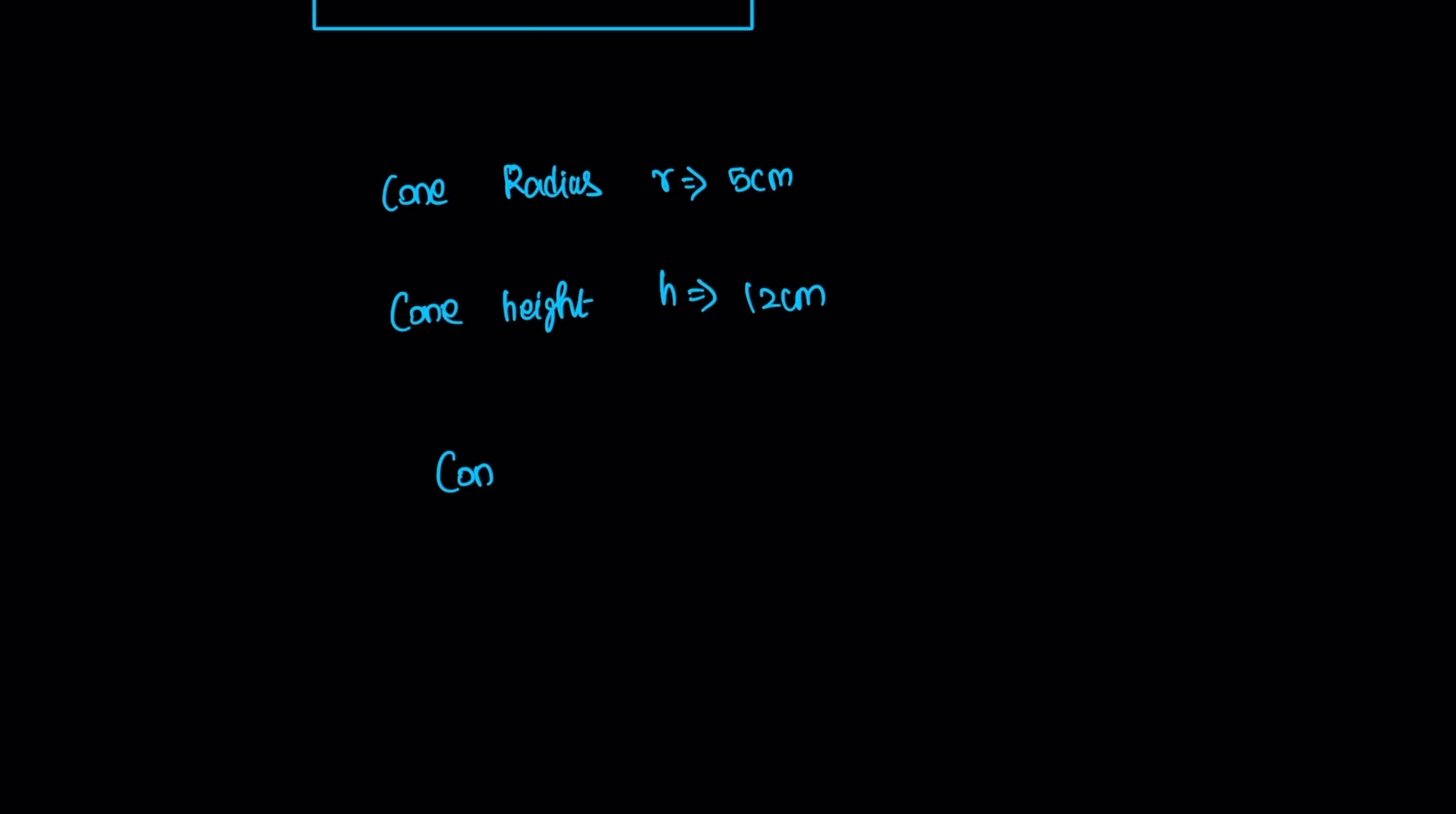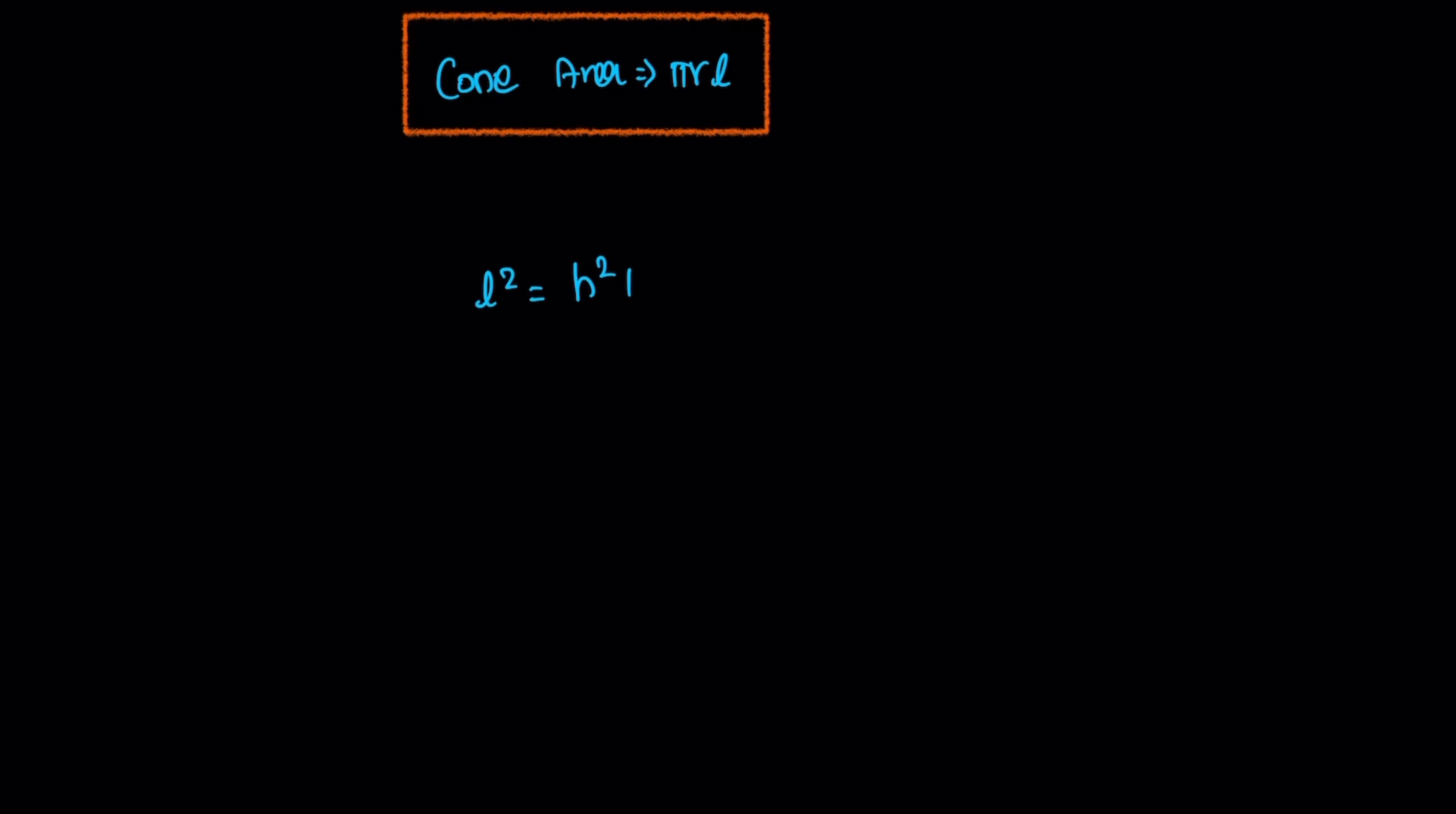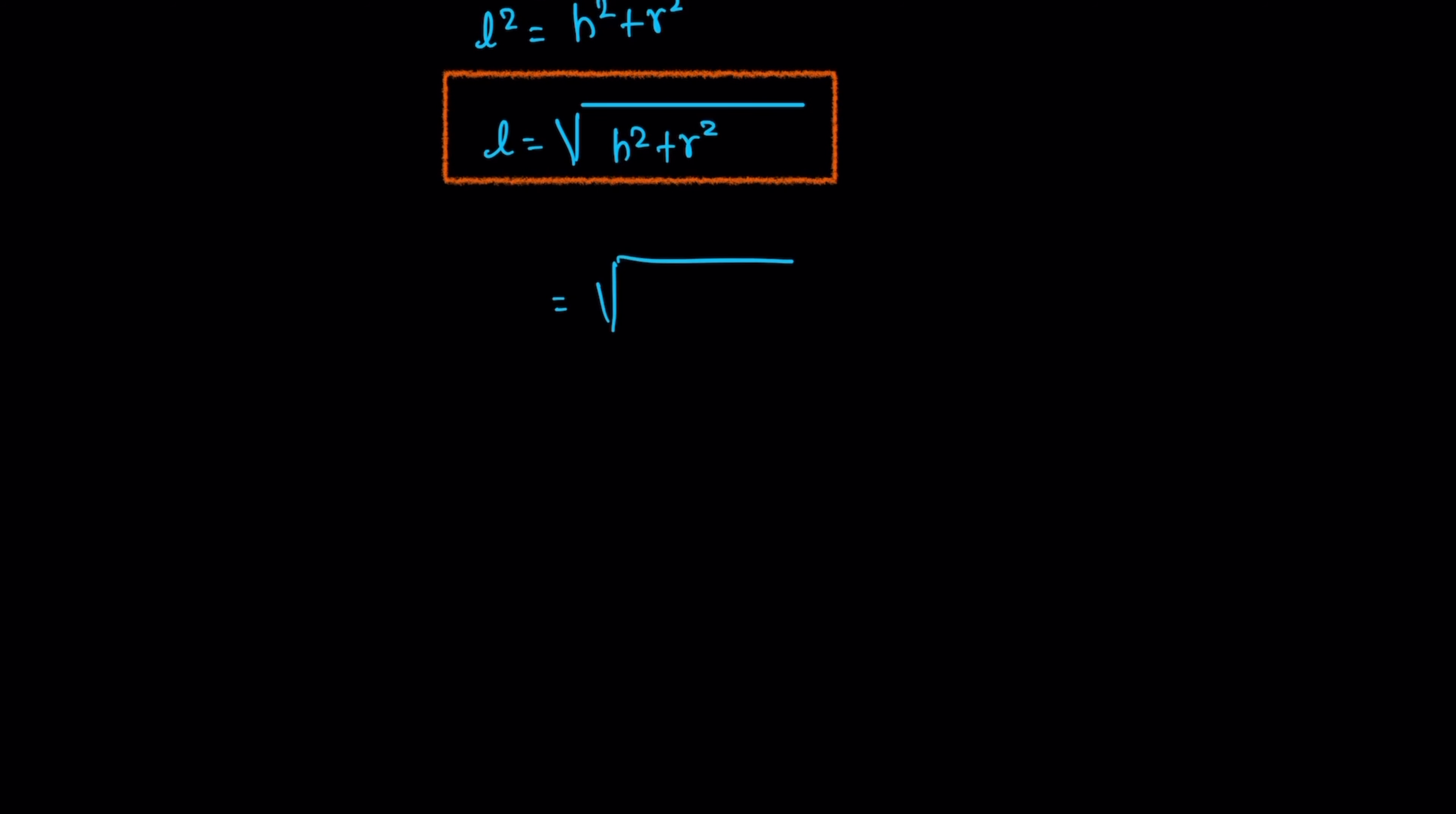But the cone area requires the slant height, which is not given. So L² equals h² plus r². L equals square root of h² plus r². We have h and r values, so we can replace them. Square root of 12² plus 5², which is square root of 144 plus 25.